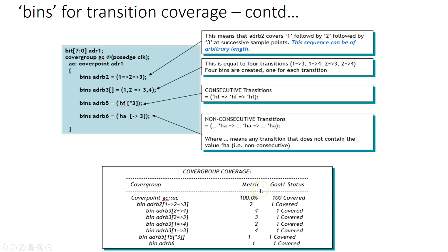And here is the simulation log which shows all the transitions. One of the good things about this particular simulator that I am using is it clearly shows in the log the number of transitions that you have specified and it will show you the coverage of it. So one, two, three which is the first bin. Then the four transitions of the second bin. Then the consecutive transitions of the third bin. And then the non-consecutive of ADRB6. And they are all covered of course the way I wrote the testbench.